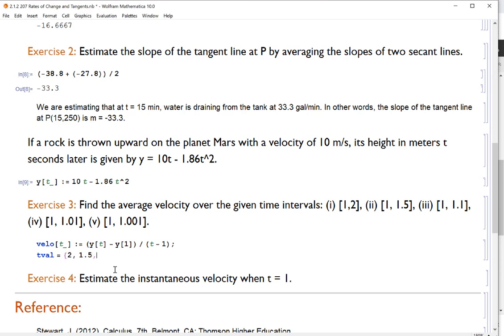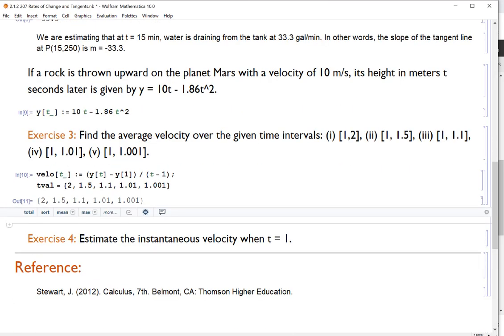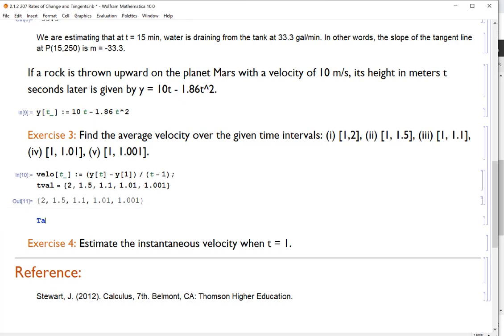Now all I need to do is come up with a table of the values that we're going to plug into this thing. And we can see that through parts one through five, we have two, 1.5, 1.1, 1.01, 1.001. Okay, and now all I need to do is just make a table of those. So I'm going to say table. And in the table, I want to take the velo, I'm doing t values, double brackets of each, put in an i, so they cycle through each one of my times. And I'm going from i equals 1 to 5. We have five different times here.